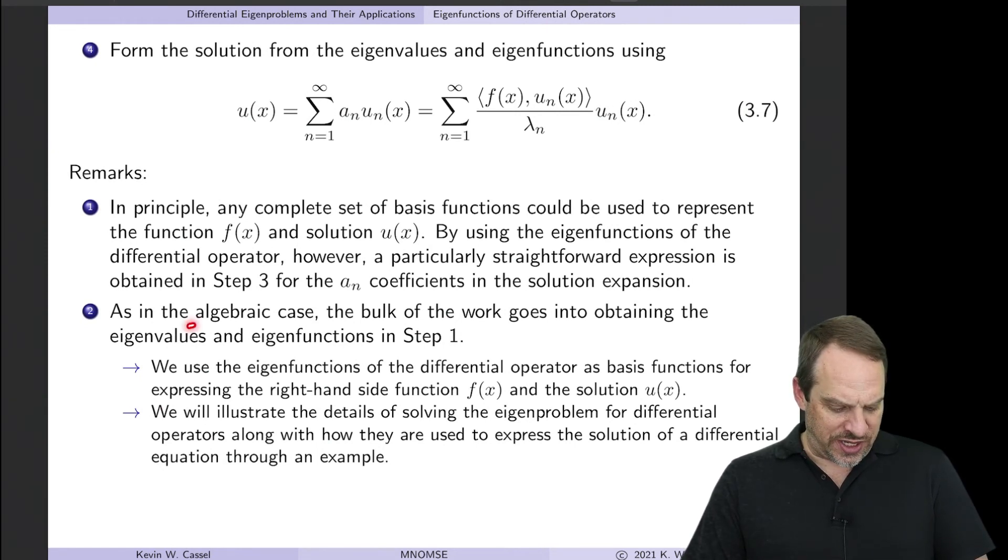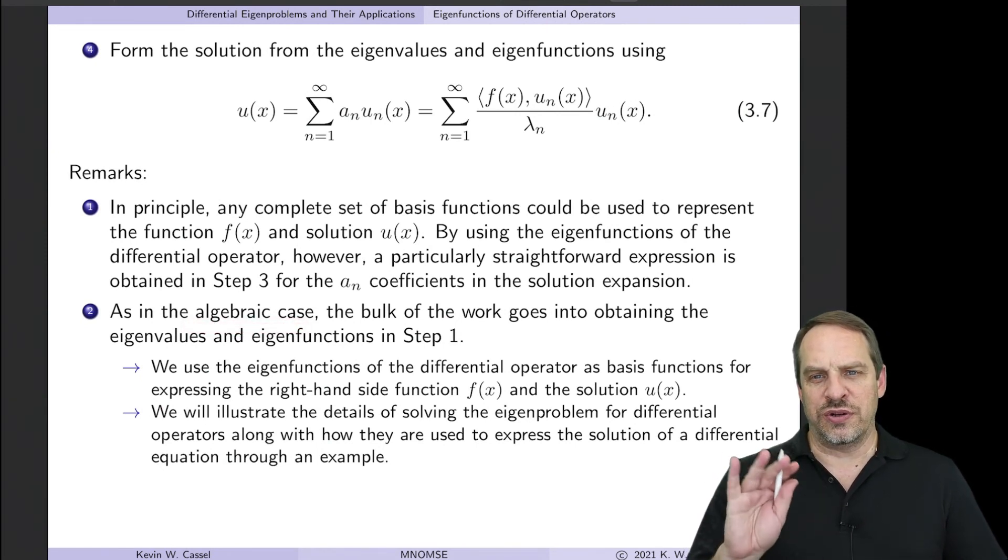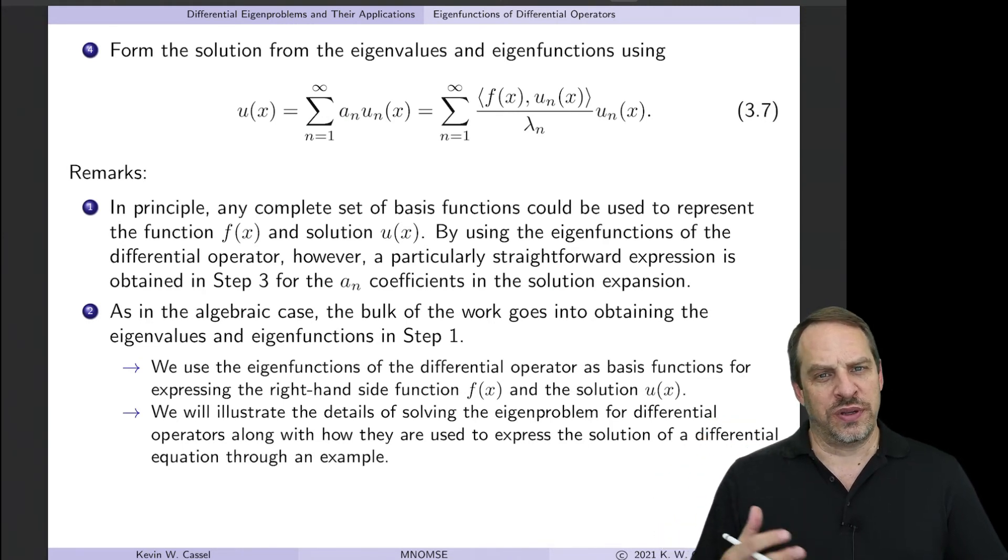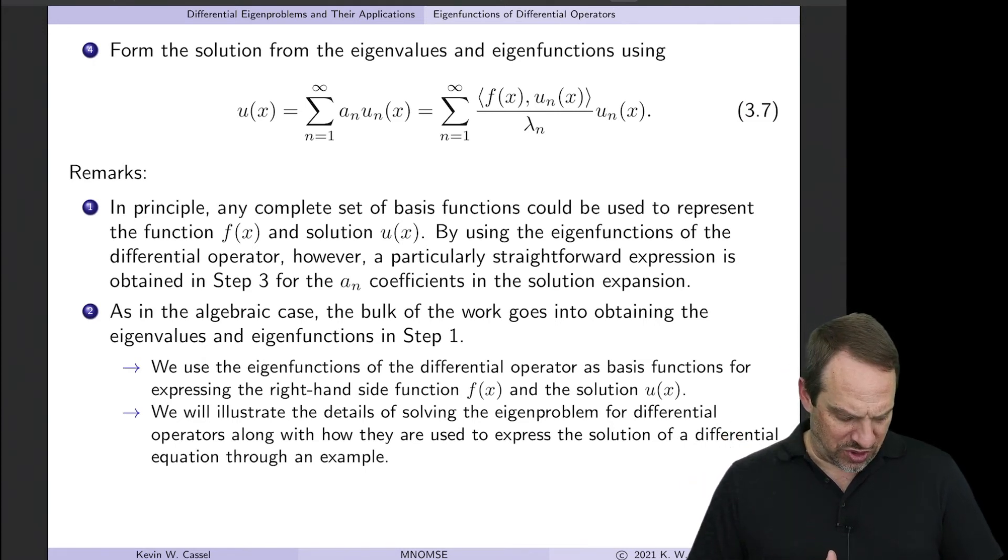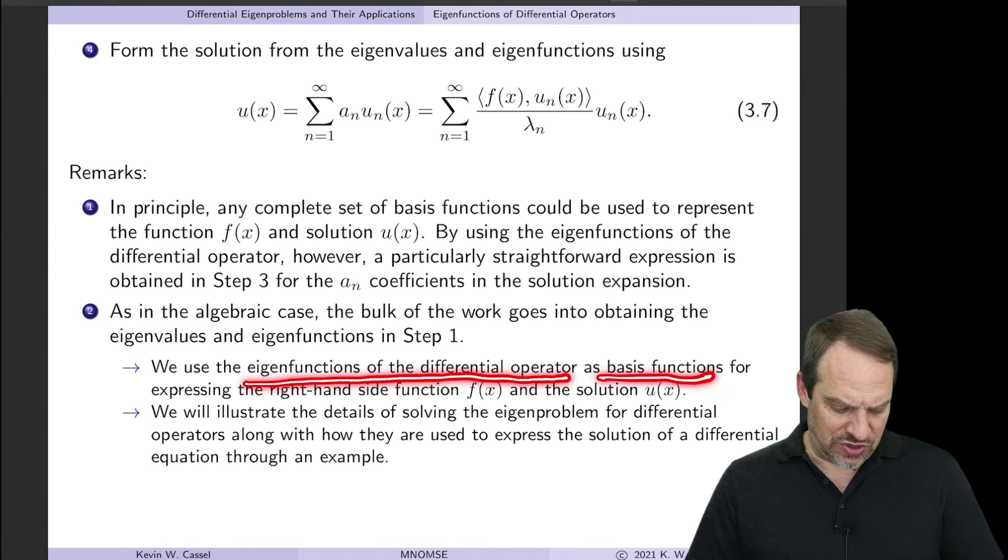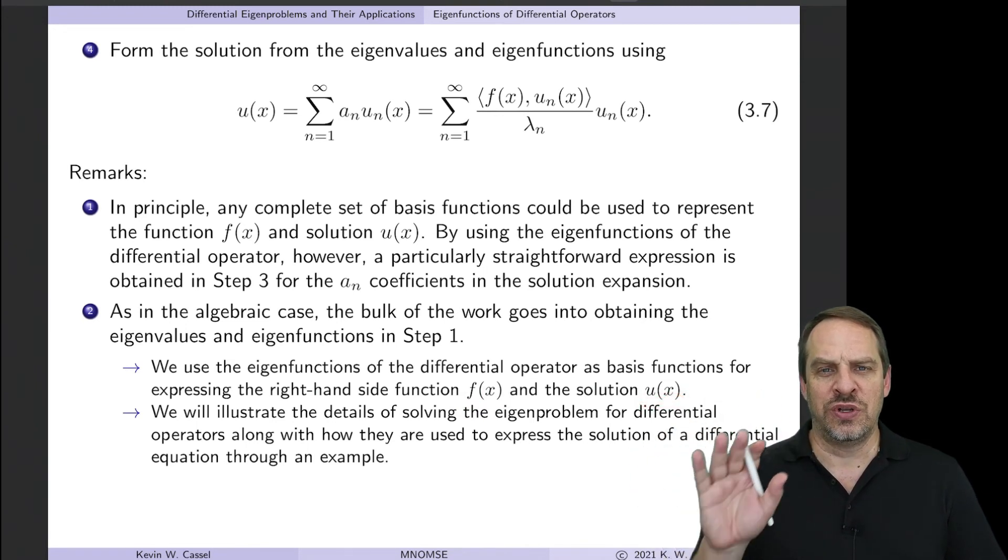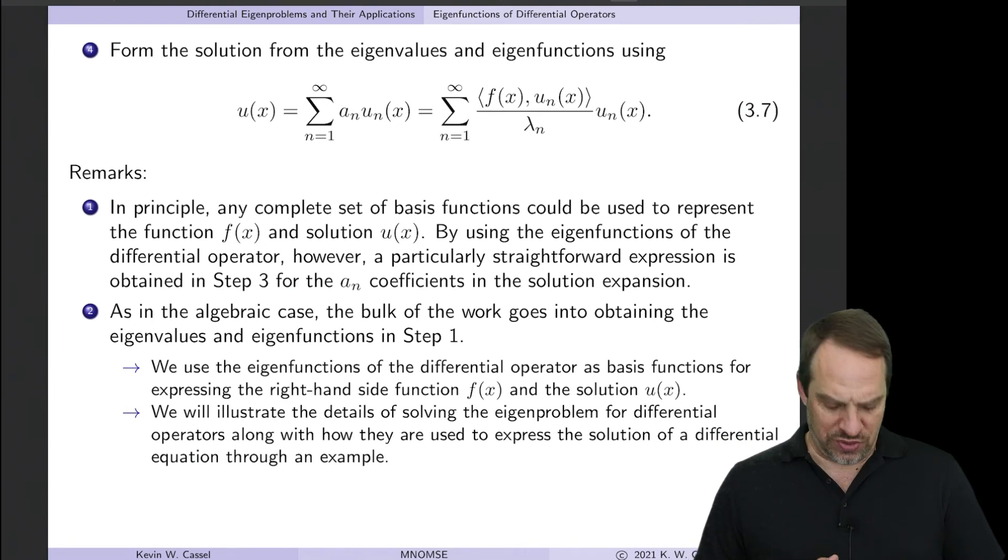Now, just as in the algebraic case in Chapter 2, the bulk of the work here is in Step 1, getting the eigenvalues and eigenfunctions of our differential operator. Steps 2, 3, and 4 are very straightforward. And in fact, we've already done all the work. So Step 1 is really where most of the work lies. Once again, what we're doing is using the eigenfunctions of the differential operator as basis functions for expressing the right-hand side function f as well as the solution U. Again, very much the same way that we did in Chapter 2 for AU is equal to B.